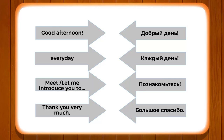Pay attention to the endings: DOBRY DEN — DEN is masculine gender, that is why the ending of DOBRY is I-kratkoye. Likewise in KAZHDIY DEN. In BOLSHOE SPASIBO, because SPASIBO ends with O, that is why the ending of BOLSHOE ends with YE. You will learn precisely how to identify and use these concepts in upcoming modules. For now, note them down in your notebooks so you have a fair idea about greetings in Russian.